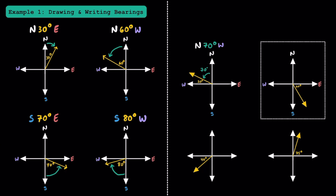Now let's try the next one. Let's think about the bearing relative to the north and south axis. Since it's pointing to the south, we start in the south direction. Since we know this is 60 degrees from the east direction, 90 minus 60 gives us 30 degrees from the south. Writing our bearing: we start with south, use 30 degrees, and since it's pointing towards the east, we write east. The bearing is south 30 degrees east.